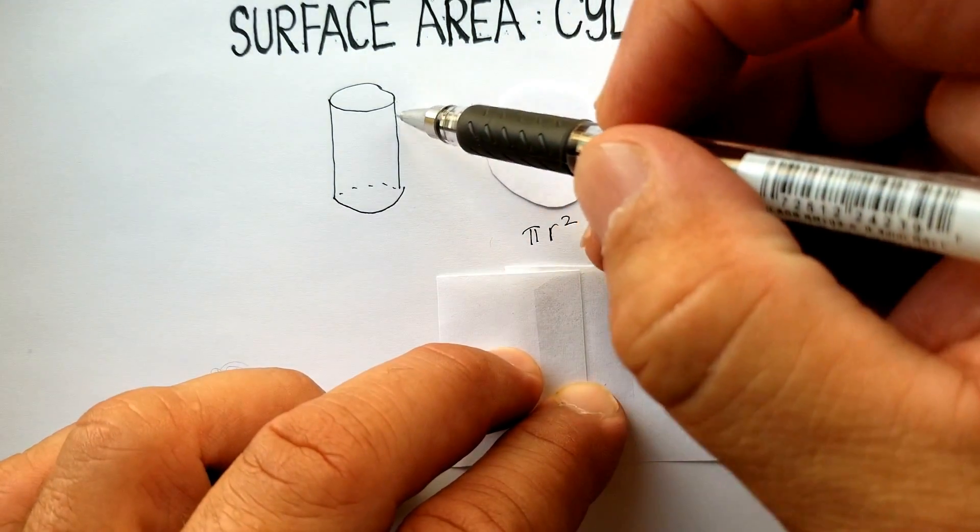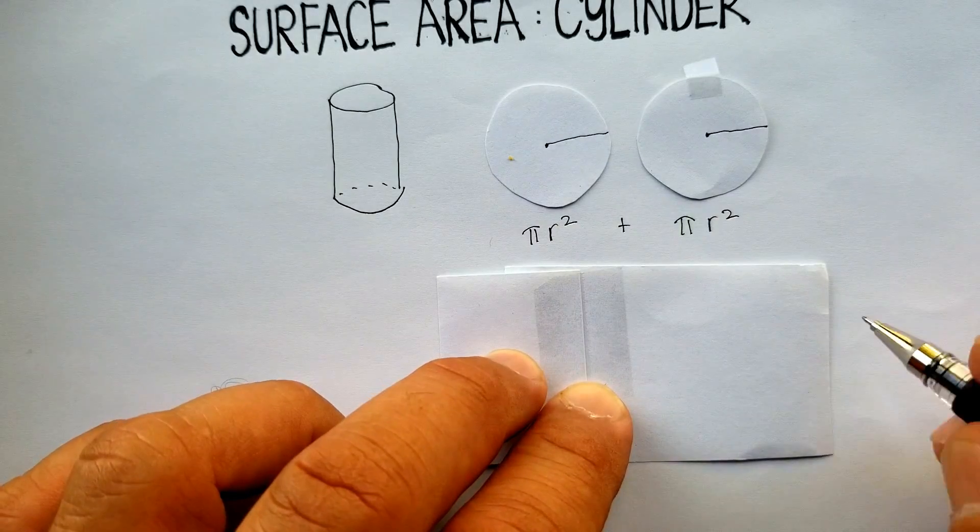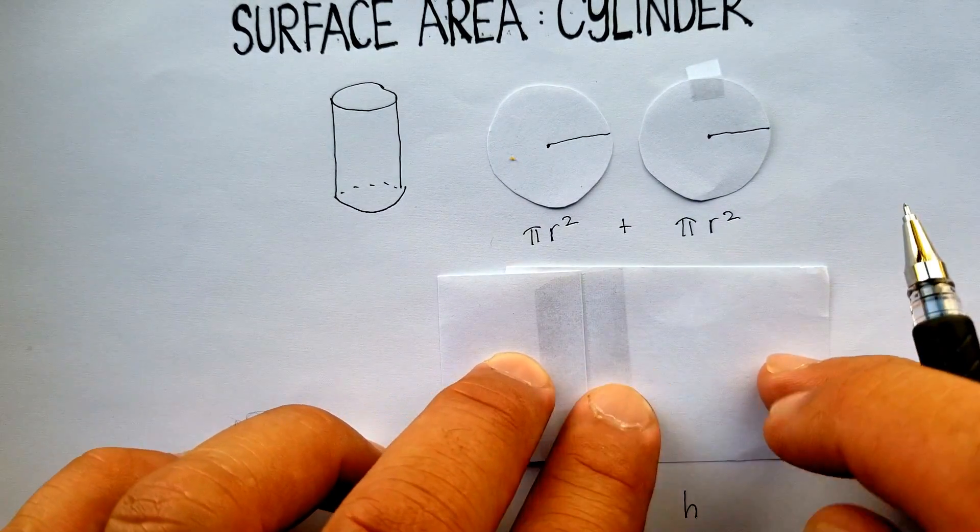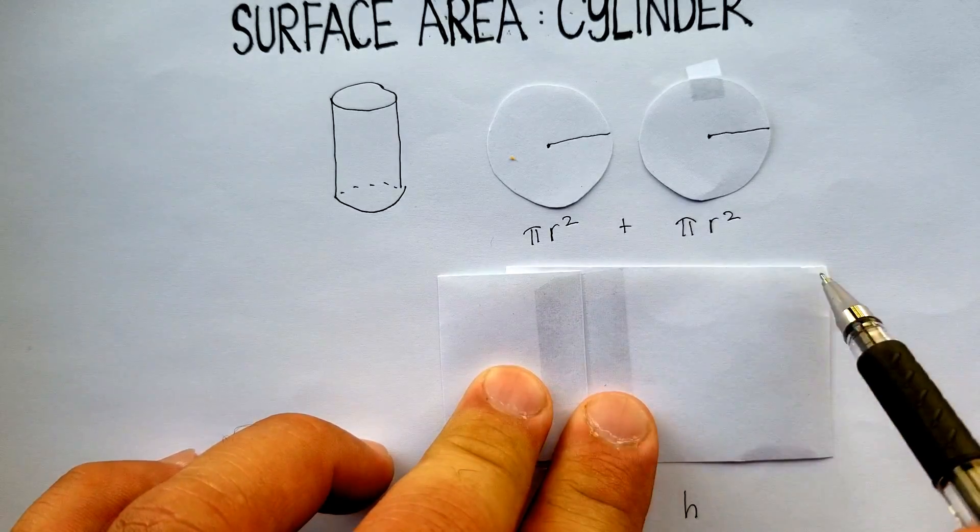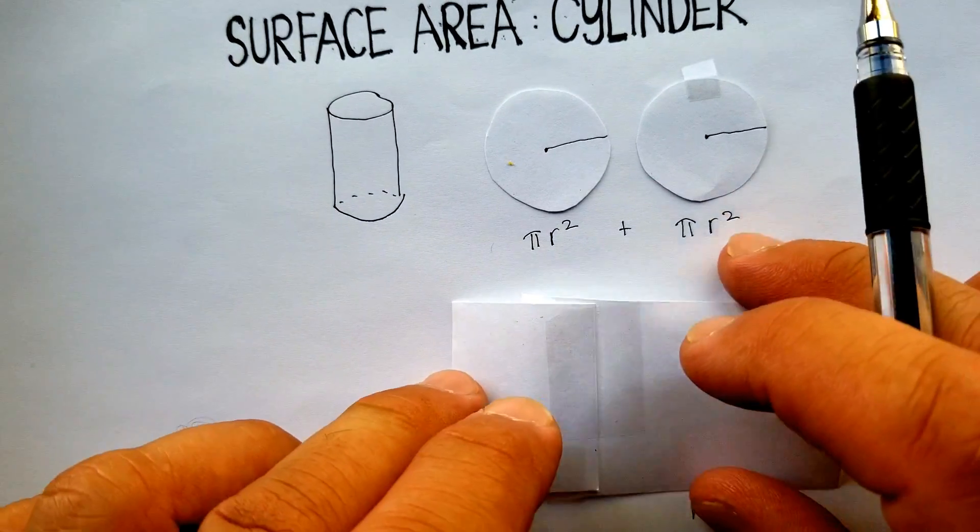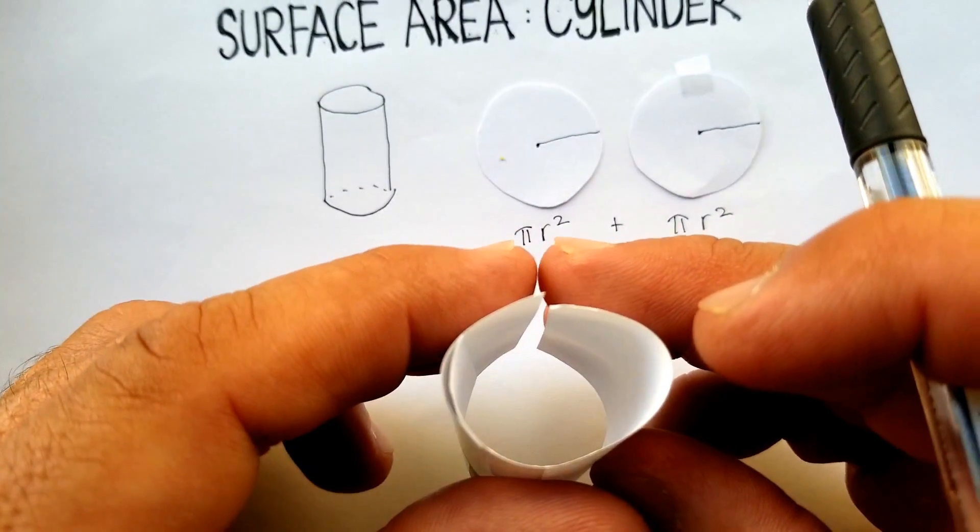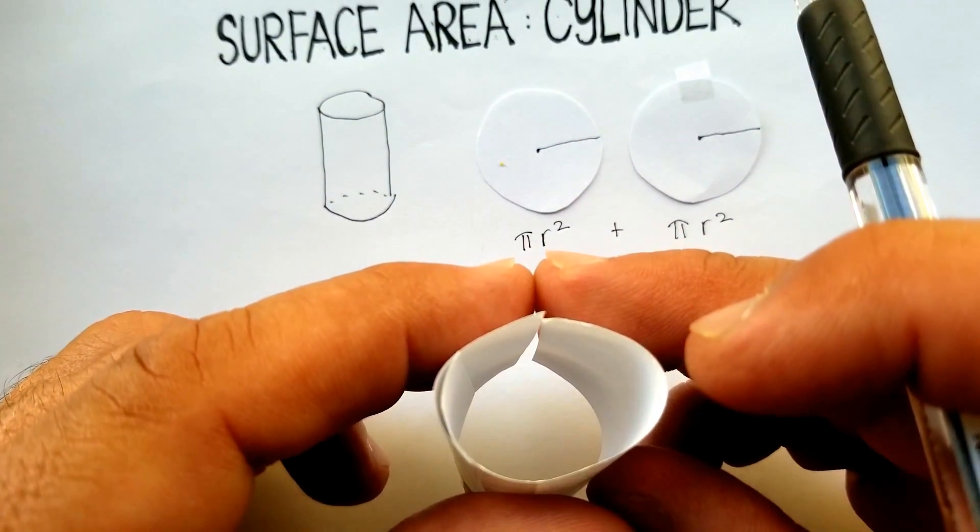The height is really just this distance right here. But what is this distance right here? Well, let me redo this. It's really just the circumference of the circle.